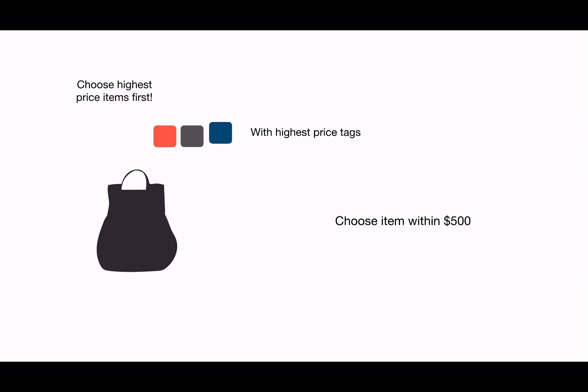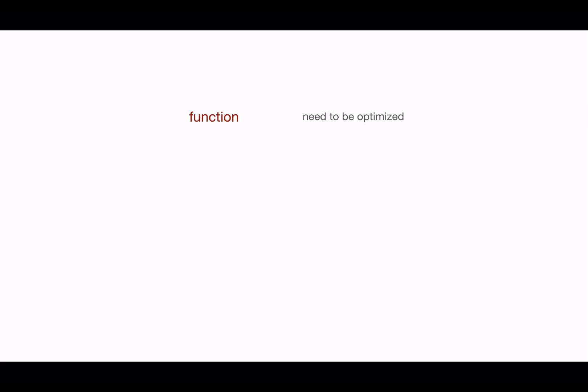Here comes the optimality problem: how do you decide which choice is optimum? Formally, assume you have an objective function that needs to be optimized — either maximized or minimized. At each step, a greedy algorithm makes greedy choices to ensure that the objective function is optimized.